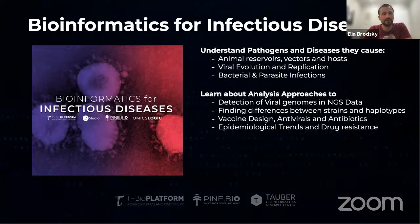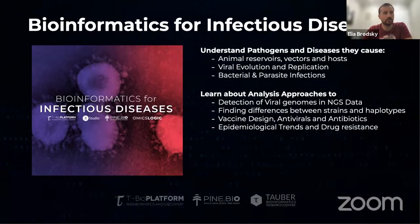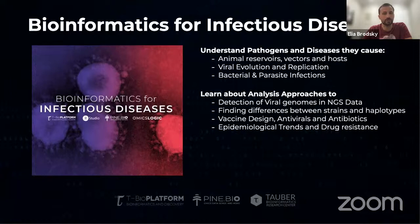We'll talk about how to detect viral genomes in next-generation sequencing data, looking at methods where we can take next-generation sequencing data of all RNA or total RNA, identify specific pathogens, and validate that we are finding viral genomes. We'll talk about different strains and haplotypes, vaccine design, antiviral drug design, and antibiotics, and look at epidemiological trends in drug resistance applicable to mycobacterium tuberculosis, malaria, and other pathogens.